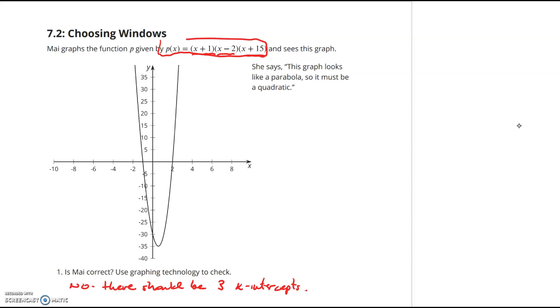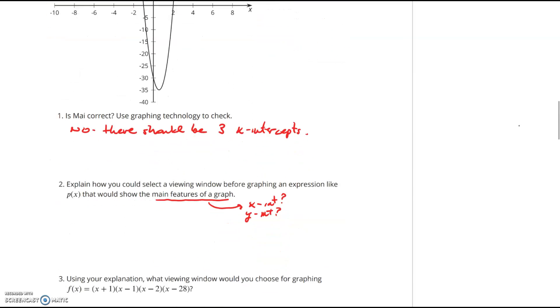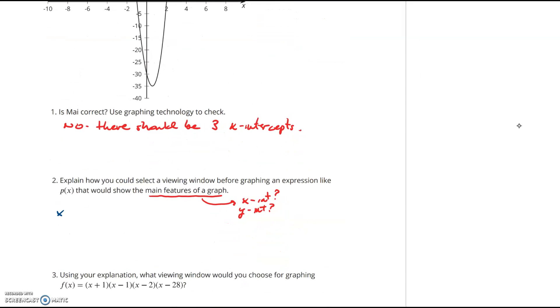If we want to find these x-intercepts, remember, that's simple to do, simply by taking each one of these factors, set it equal to zero, and solve. So we'll take the first factor, x+1, set it equal to zero, and solve. And we get an x-value of negative 1, so I should see an x-intercept at the point (-1, 0).